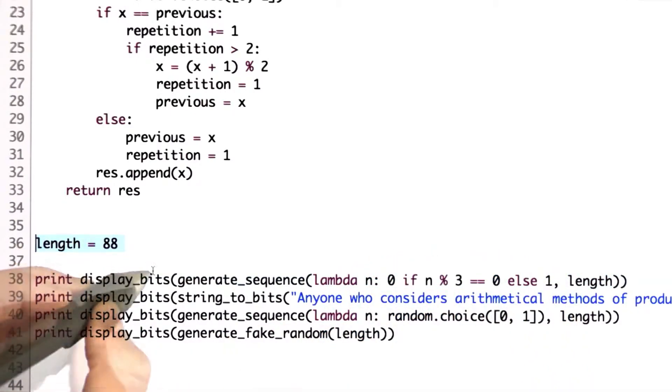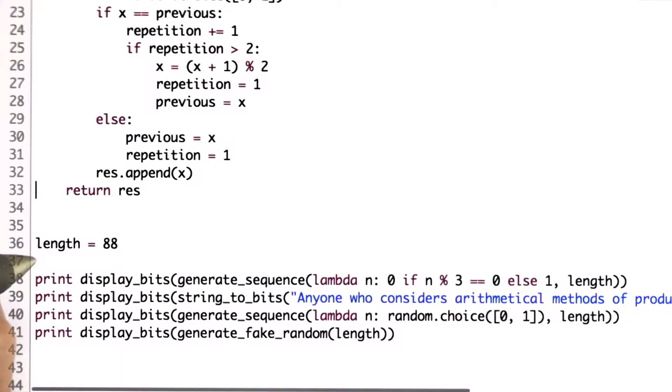Display bits turns a list of bits into a string. All this code will be available linked from the course. That is what generates the first sequence.